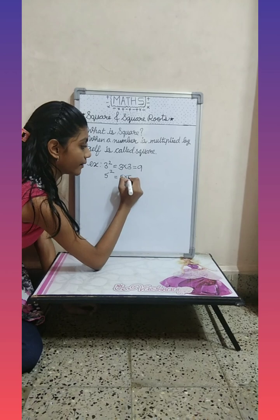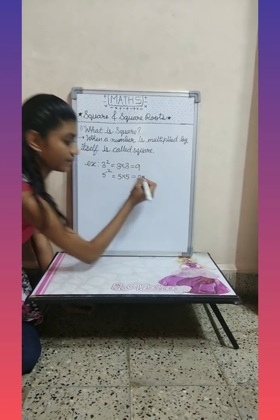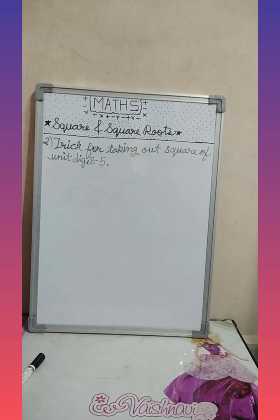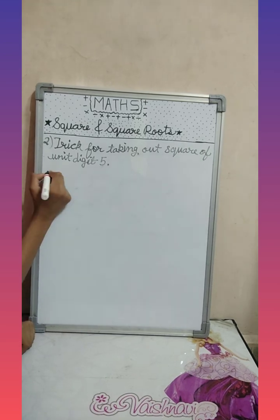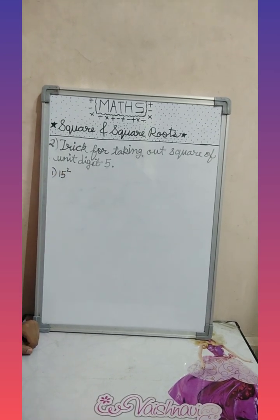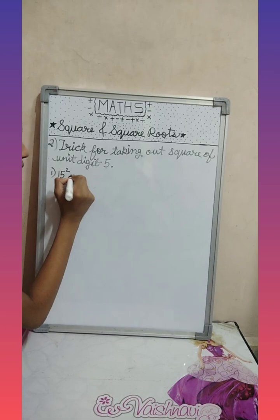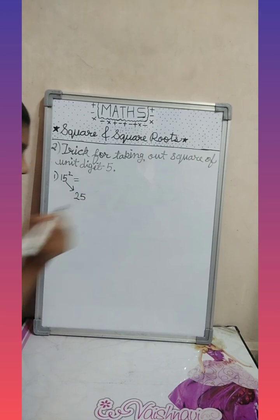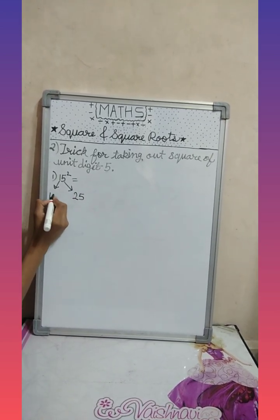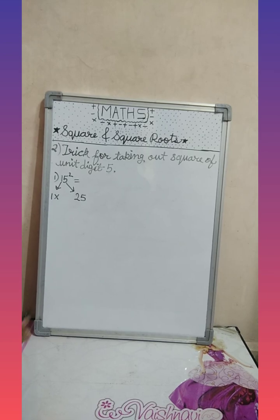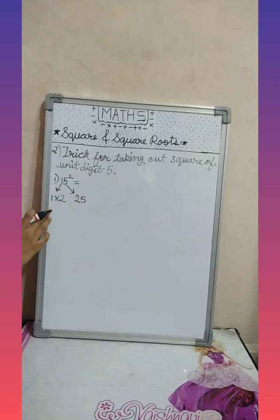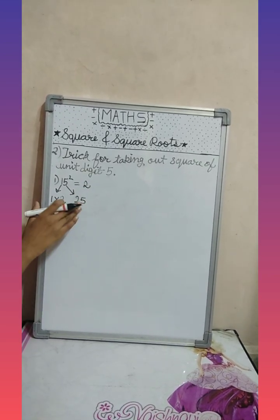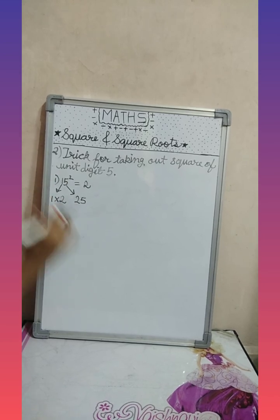So let's see the trick for taking out square of unit digit five. First we will take fifteen square. First we will take five square, it is twenty-five. And we will multiply one with its next number, it is two. One multiplied by two is two, and write down the number five square as it is. So we got the square of fifteen.